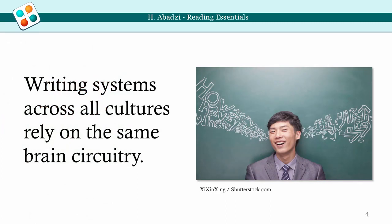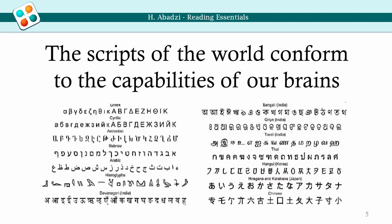The writing systems across all cultures rely on the same brain circuitry. In every case, a substantial amount of information must be packed so that readers get maximal semantic and sound cues through minimal orthographic units. Writing systems did not evolve arbitrarily, but were gradually optimized to fit the human cognitive system. During teaching, learners' brains become trained to extract from print an optimal amount of information.